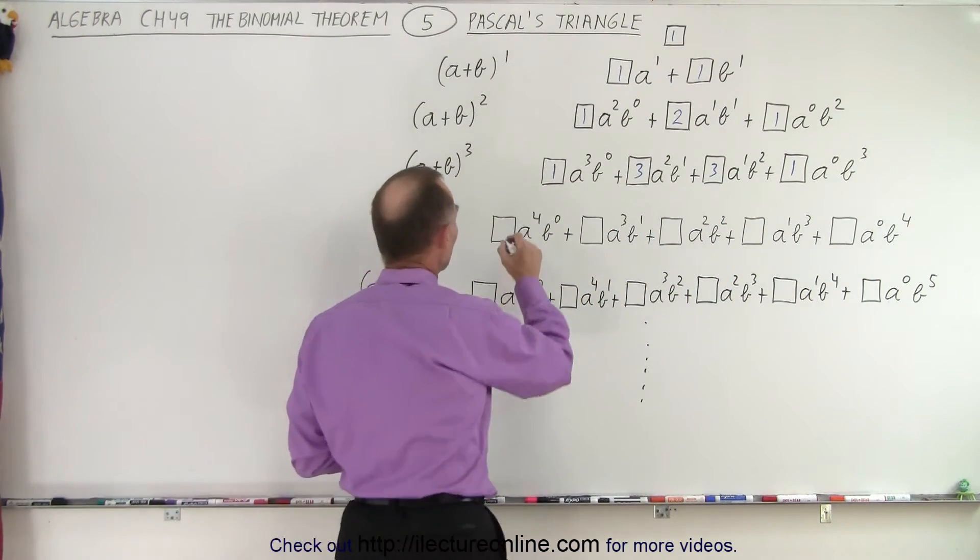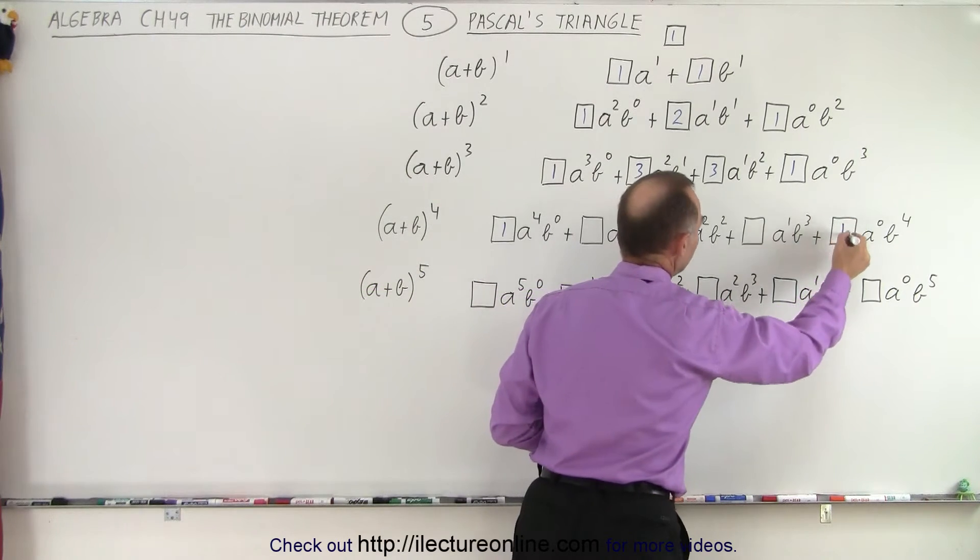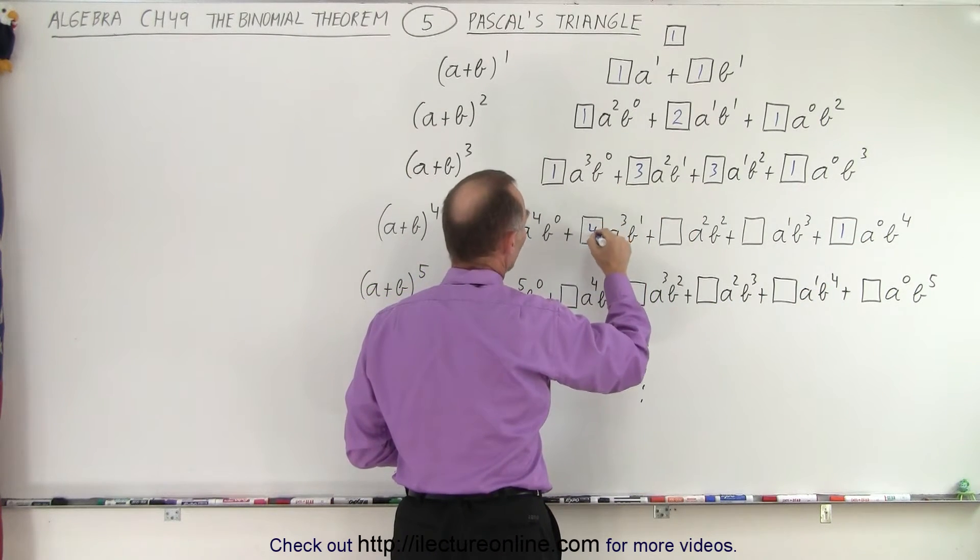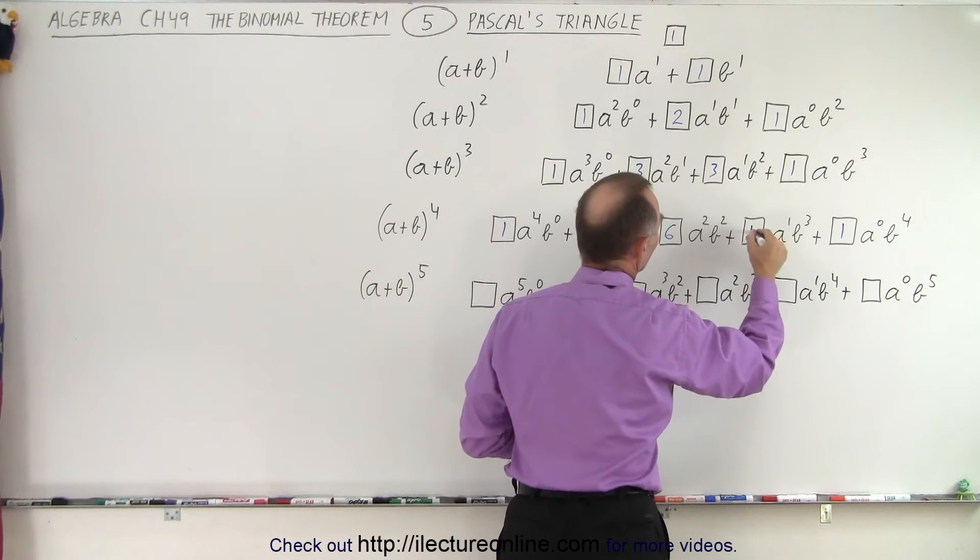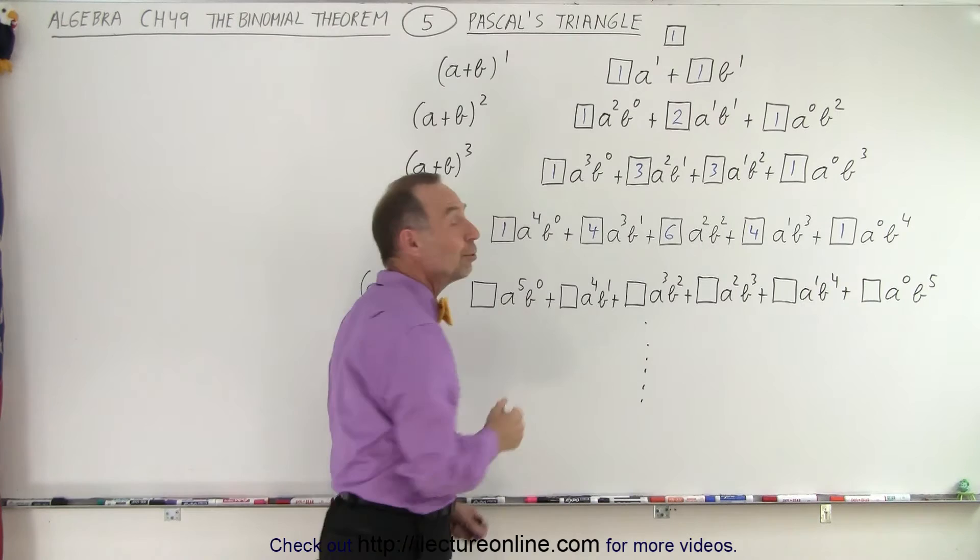The next one, again, we write the 1s at the ends. Now we have 1 plus 3, which gives us a 4, 3 plus 3, which gives us a 6, 3 plus 1, which gives us a 4. And that's how we get the numerical coefficients.